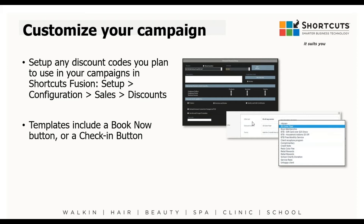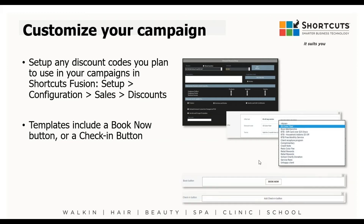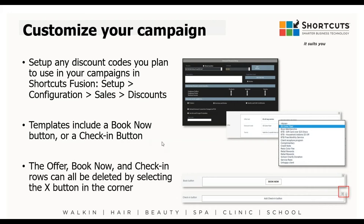To link the discount, in the offer section you'll see a discount code dropdown. If it doesn't appear instantly, just press done and refresh your browser, then go back into that campaign and you'll see it in the dropdown. The templates also include a book now button — if you have online booking or a check-in option for clients it will appear in the template. If you don't want this to appear, just press the X button in the top right to remove it from your campaign.